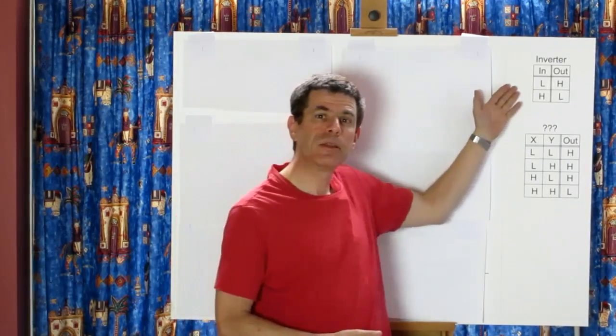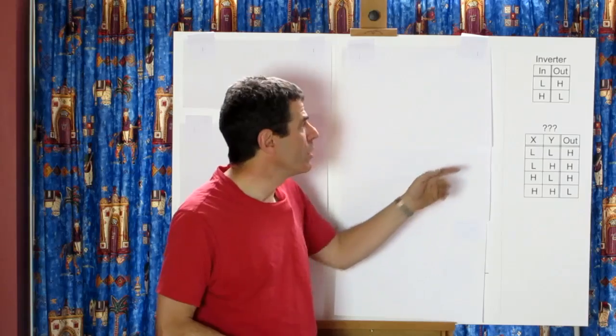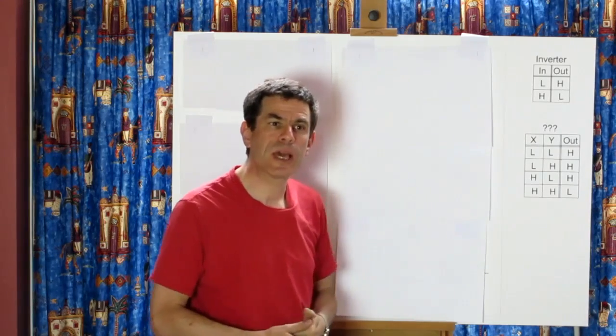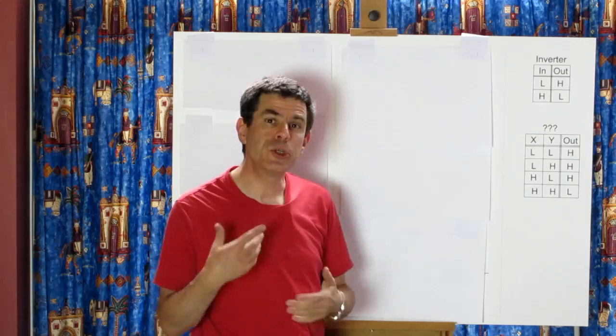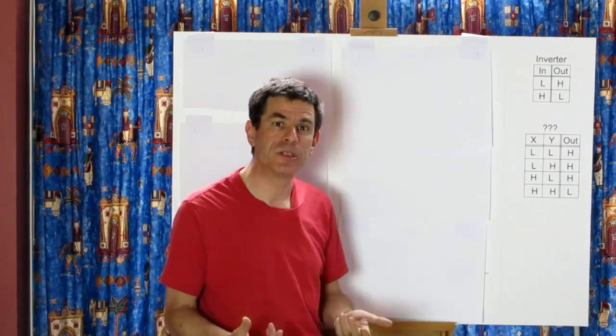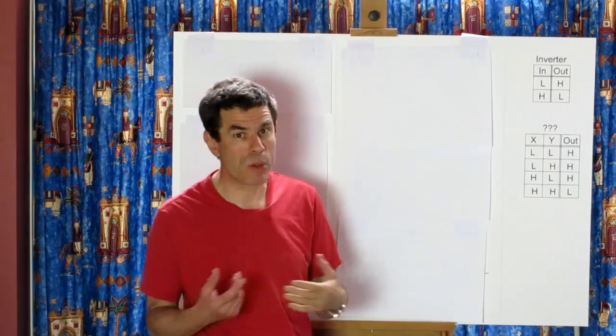So far we've created these two tables. We created this table when we looked at the behavior of a single transistor and it had the intuitive interpretation of being an inverter because we got the opposite out of what we put in.